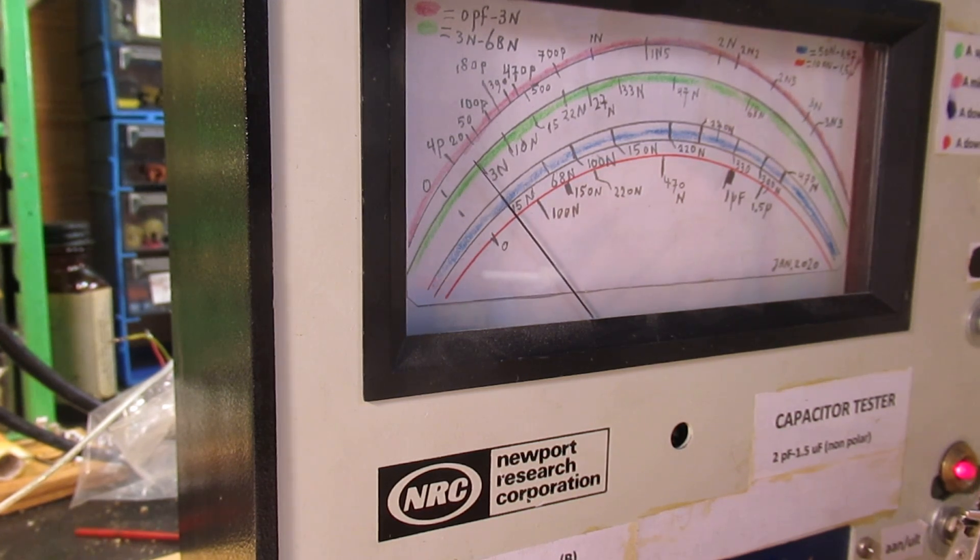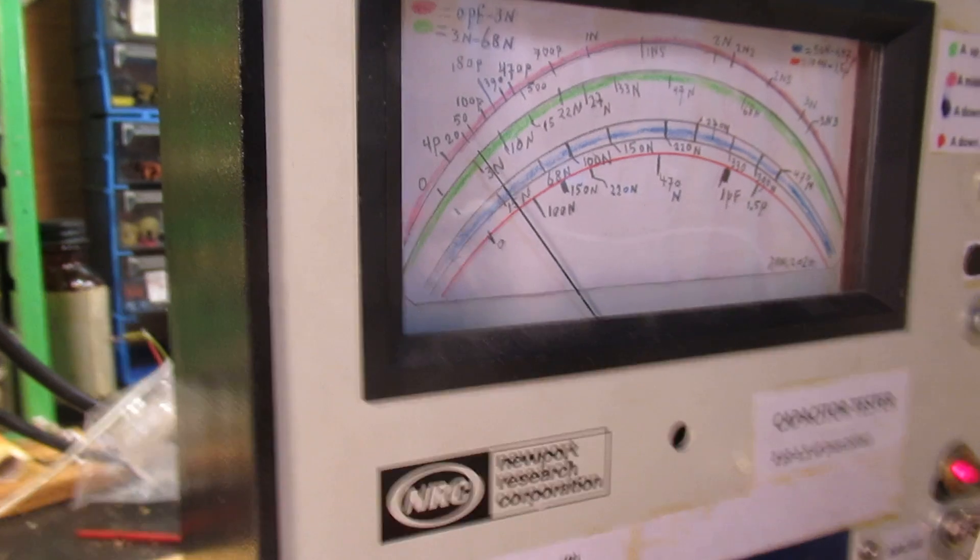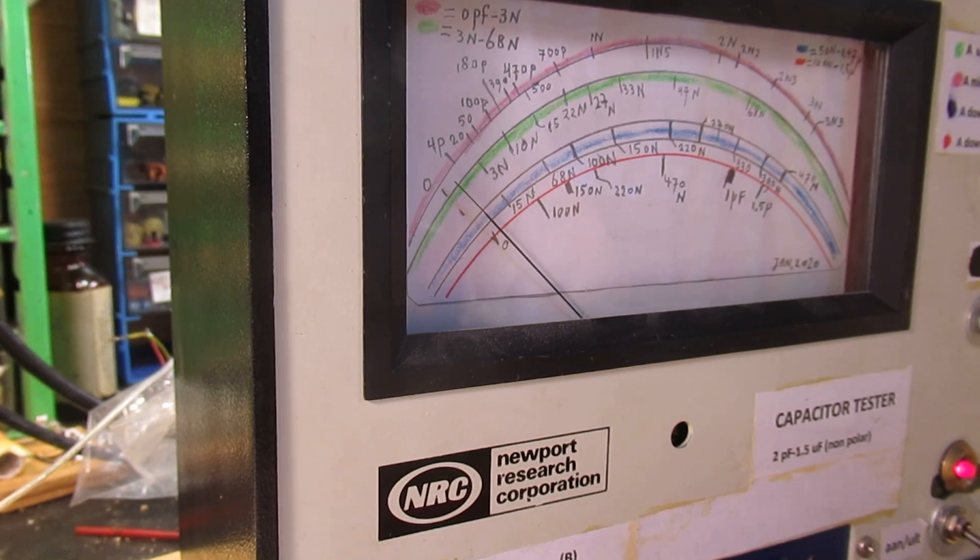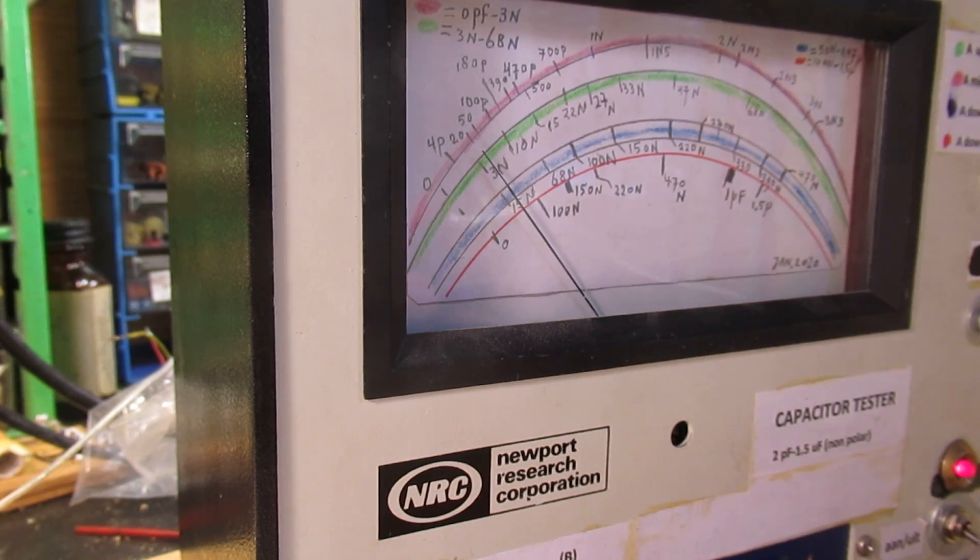So you surely see now the meter move. It goes to 20 picofarad. I turned it. Well, I wanted to show the differences in capacitance. Here you see a little bit how it works.